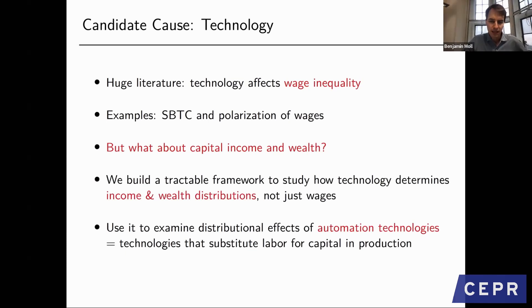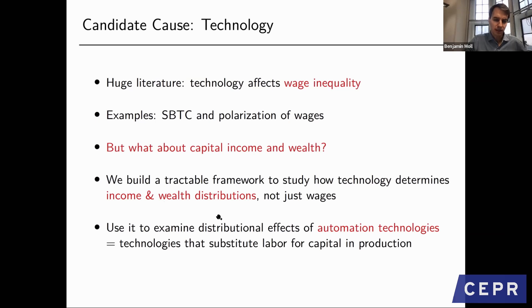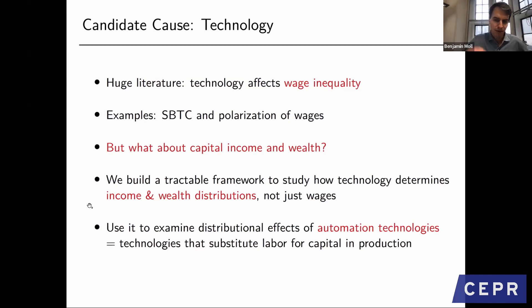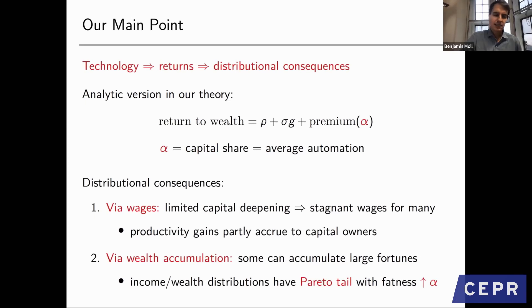Here's what we do in this paper. We build a tractable framework to study how technology determines not just the distribution of labor incomes but more generally the distribution of total income—including capital income—and the wealth distribution. We then examine the distributional effects of automation technologies, meaning technologies that substitute labor for capital in production, such as robots.